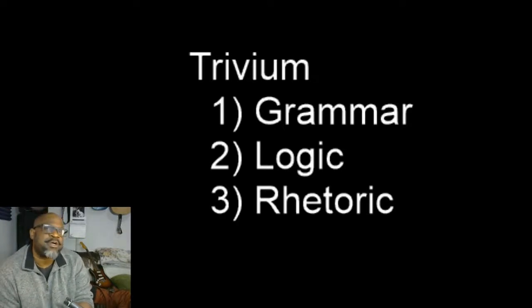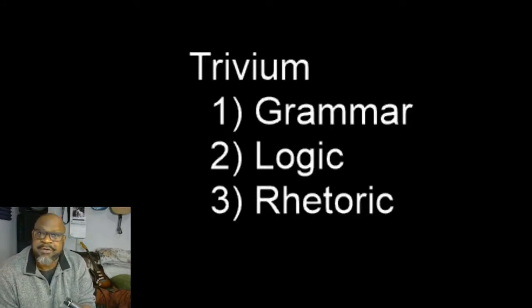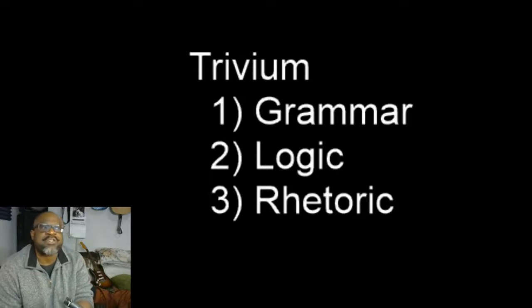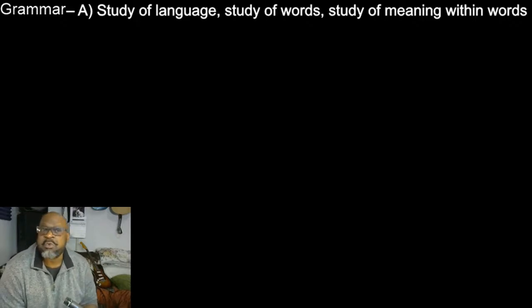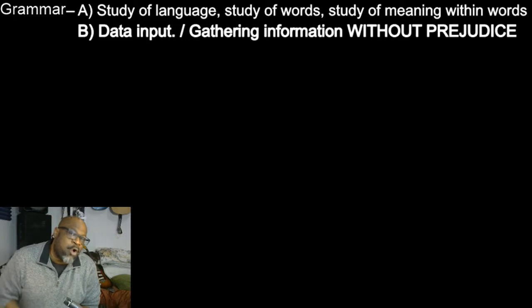As we discuss the trivium, it's important to understand that each one of the three subjects within the group represents not only its corresponding definition as an academic field of study, but more importantly, each represents a critical step in a systematic process. Grammar, a study of language, a study of words, a study of the meaning within words. Its secondary definition, however, is the first step in the critical thinking process, and that is data input, gathering information without prejudice. In this step, we approach any new subject as if we don't know anything. We are simply collecting raw data without regard to judgment. This is purely an exercise of documentation and collection.